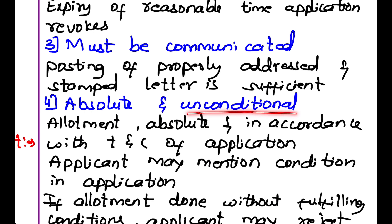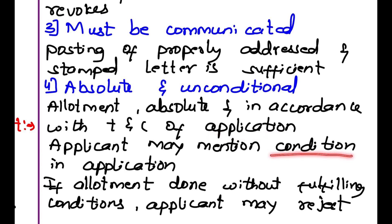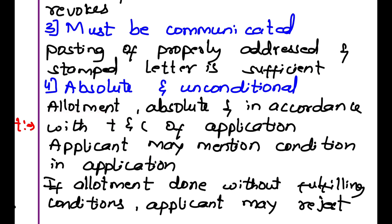Allotment must be absolute and unconditional, and in accordance with the terms and conditions of the application. The person who wants to buy shares, along with the application, will mention certain conditions. The company, while accepting the allotment, should also accept those conditions. If they reject the conditions and only do the allotment, the applicant has the power to reject the allotment.